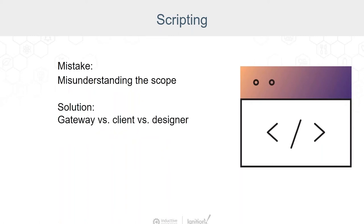The final mistake we'll cover today is misunderstanding the scope of a project. There's a difference between how scripts act based on whether they cause a gateway event or a client event. Furthermore, depending on screen size and resolution, scripts can act and look different in the designer versus in the client versus the gateway.